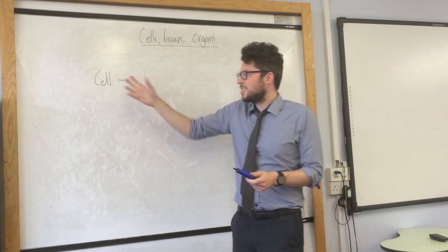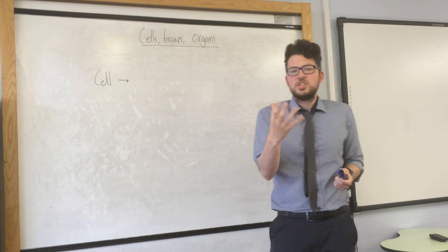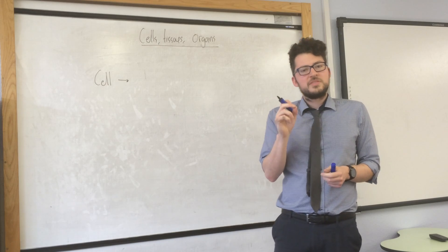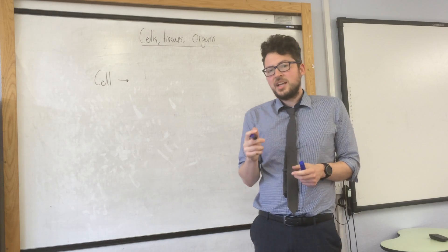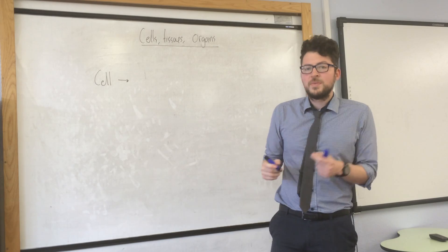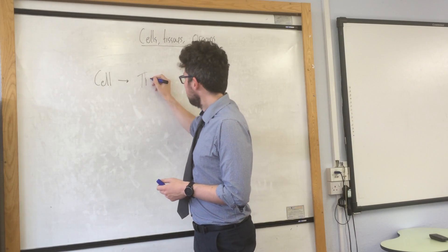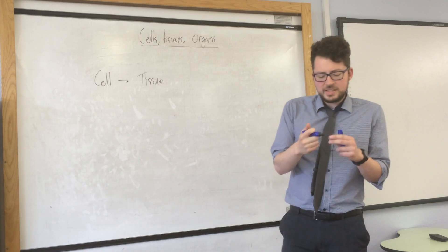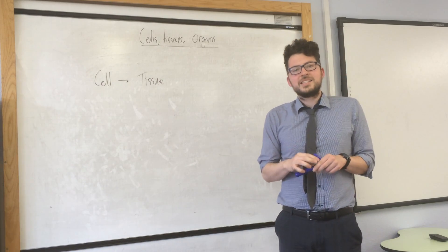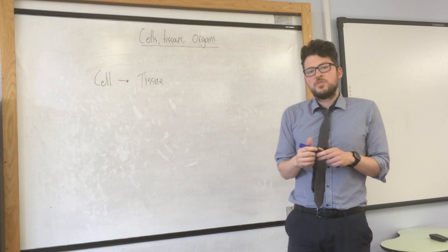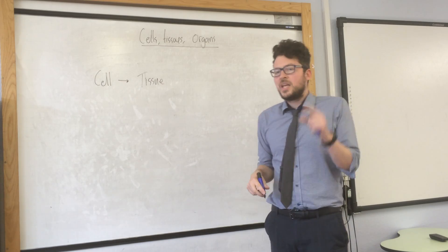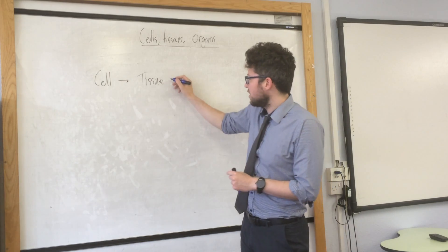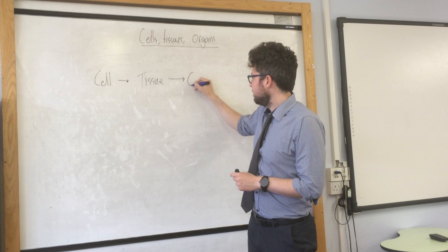We start with a cell, which is just the simplest unit that makes up a living thing. But if you put a group of similar cells together, you form a tissue. A tissue is a group of similar cells working together to perform a specific function. If you put a group of different tissues together, you form an organ.